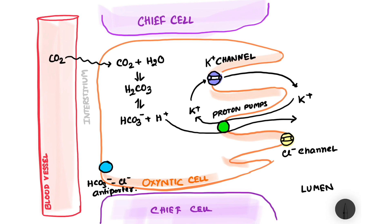Now this bicarbonate that was generated goes to the bicarbonate chloride antiporter and goes out into the interstitium. And the chloride present in the interstitium by using the same antiporter enters the oxentic cell. And this chloride that enters the oxentic cell goes straight through the chloride channel and gets secreted into the lumen.